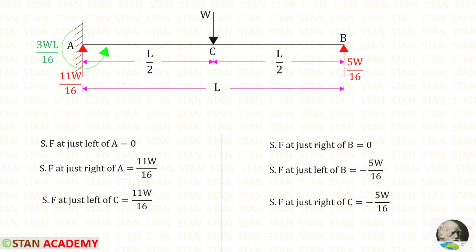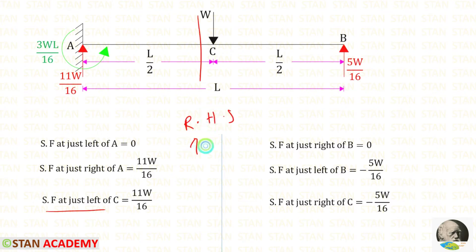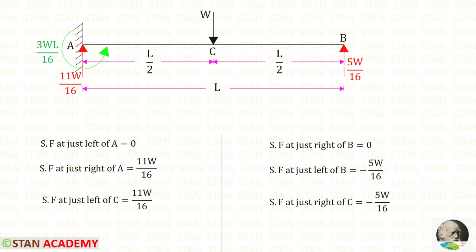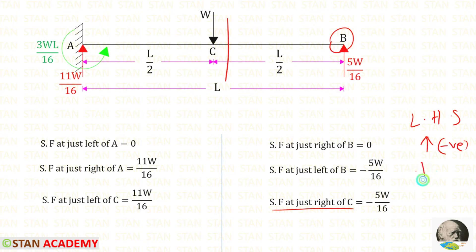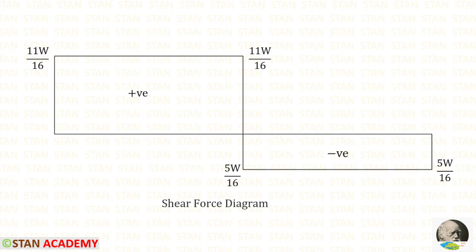Now we are going to draw the shear force diagram. Before making the diagram, let us find the shear force values. For just left of C, using the right hand side rule, upwards is positive and downwards is negative. For just right of C, from point B using the left hand side rule, upwards is negative and downwards is positive. Here you can see the shear force diagram.